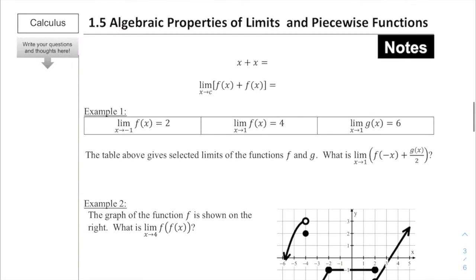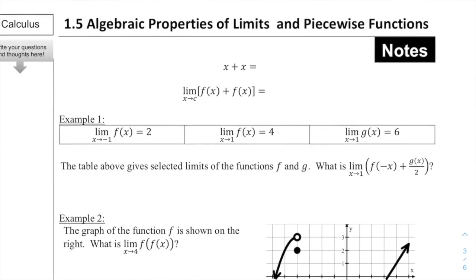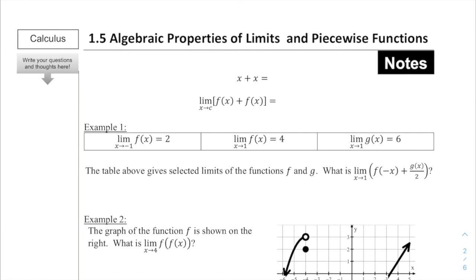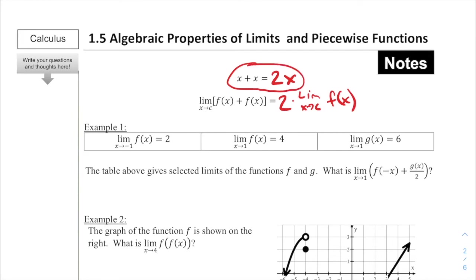Now let's move on to practice problems from the worksheet. Just as x + x equals 2x in algebra — you have two of those x's — similarly the limit as x approaches c of f(x) + f(x) equals 2 times the limit as x approaches c of f(x). Since 2 is a scalar, we can pull it outside the limit statement. This is equivalent to the limit as x approaches c of 2·f(x).